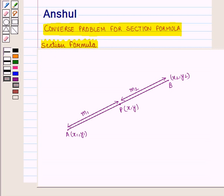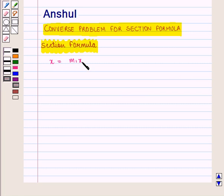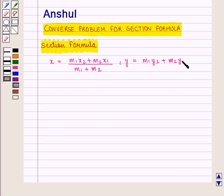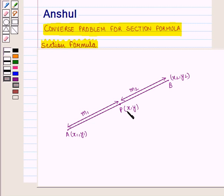The section formula states that the coordinates of the point which divides internally the line joining two given points in a given ratio is given by x = (m1·x2 + m2·x1) / (m1 + m2) and y = (m1·y2 + m2·y1) / (m1 + m2). Here P is the point with coordinates (x, y) which divides internally the line joining two given points A and B with coordinates (x1, y1) and (x2, y2) respectively in the given ratio m1 : m2.